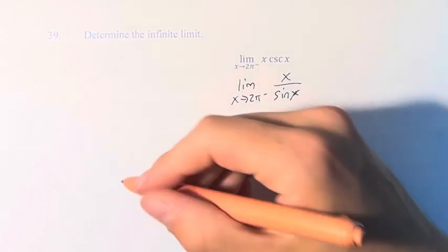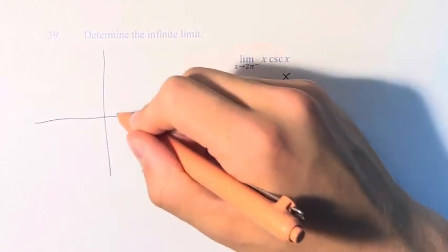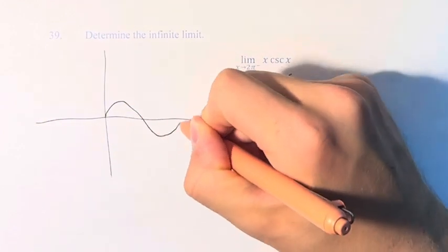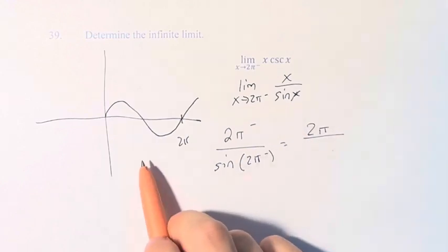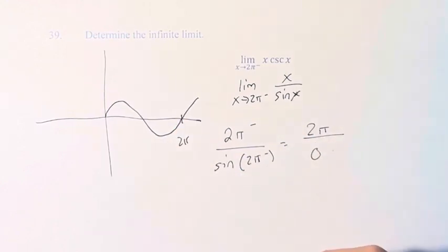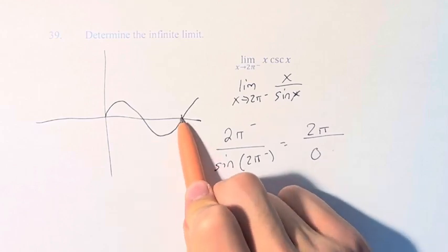And two, the sine function, if you graph it here, at 2π is equal to 0. Meaning we're approaching 0 as we get towards this 2π value.